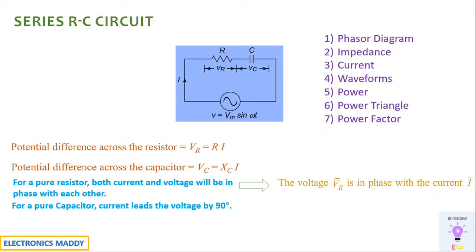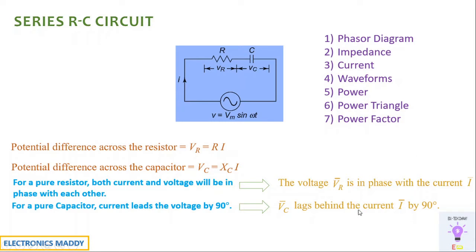For a capacitor, current leads the voltage by 90 degrees. This is also discussed in our previous videos when an AC supply is connected to a capacitor. These two important conclusions will help us get started with our analysis of the series RC circuit. We can conclude that VC lags behind the current I bar by 90 degrees, since I is leading VC. Based on only these two observations, we will be able to derive a lot of parameters and study various responses.